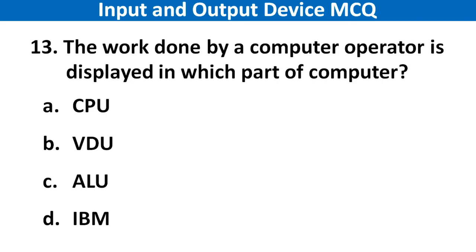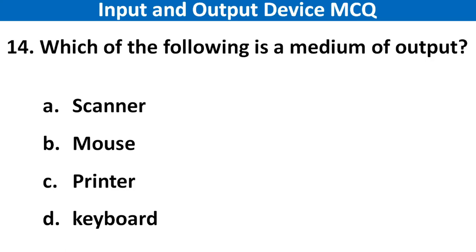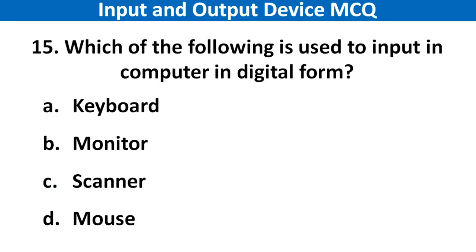Next question: The work done by a computer's operator is displayed in which part of the computer? Right answer is option B: Video. Next question: Which of the following is a medium of output? Right answer is option C: Printer. Next question: Which of the following is used to input data into computers in digital form? Right answer is option C: Scanner.